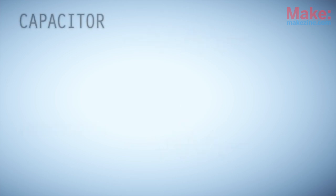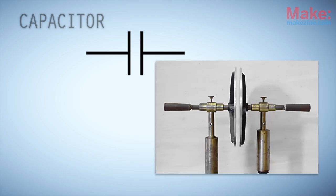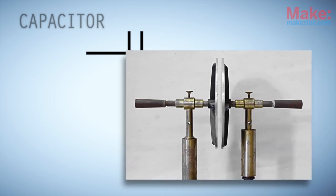A capacitor symbol also describes how it works. The two T shapes used in the symbol represent the capacitor's internal conductive plates, which are separated from one another. And it looks a whole lot like a simple parallel plate capacitor.